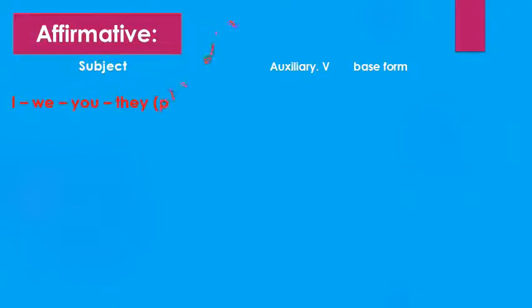So let's start with the affirmative form. So here we have subject, then the auxiliary verb, and the base form of the verb. So if the subject is I, we, you, they or any plural noun, or he, she, it or any singular noun.